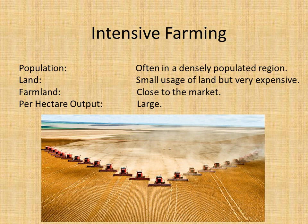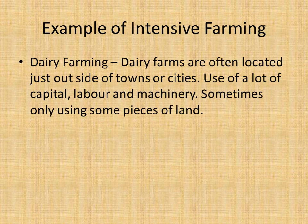Per hectare output is large, which means that although the land being used and the scale of everything might seem quite small, they produce quite a lot and get rid of quite a lot of their stock. An example of intensive farming is dairy farming. Dairy farms are often located just outside of towns and cities and use a lot of labour and capital machinery on small pieces of land.